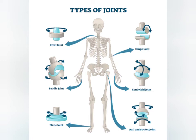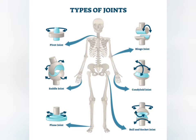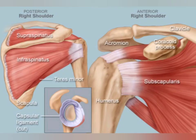Pivot joints allow a bone or a limb to rotate. One bone fits into a hoop shaped ligament that holds it closely to another bone and allows it to rotate in the ring thus formed.